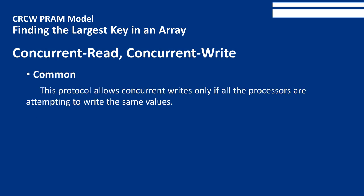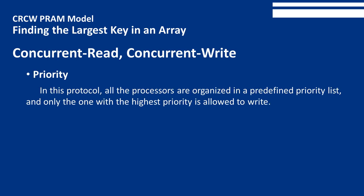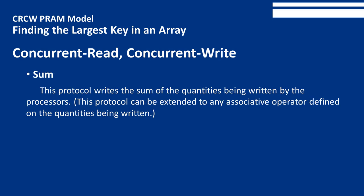Common: this protocol allows concurrent writes only if all processors are attempting to write the same value. Arbitrary: this protocol picks an arbitrary processor as the one allowed to write to the memory location. Priority: all processors are organized in a predefined priority list, and only the one with the highest priority is allowed to write. There is also a combining protocol that writes the sum of the quantities being written, which can be extended to any associative operator.